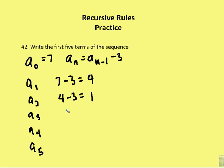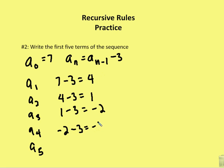A sub 3 is equal to a sub 2, or 1 minus 3, which is equal to negative 2. A sub 4 is equal to a sub 3, which is negative 2, minus 3, which is equal to negative 5.